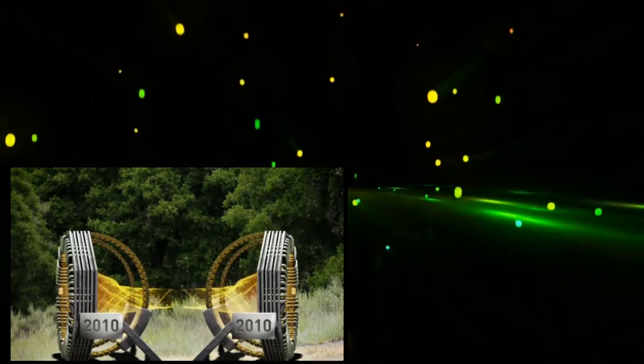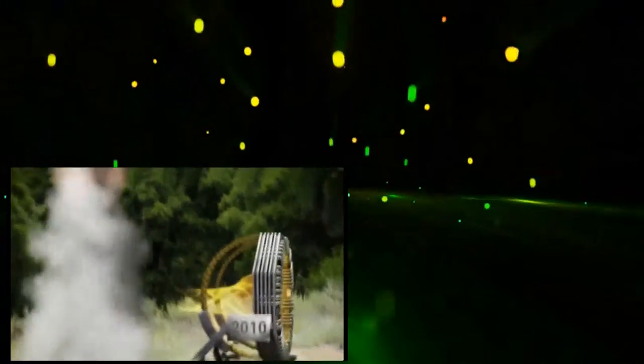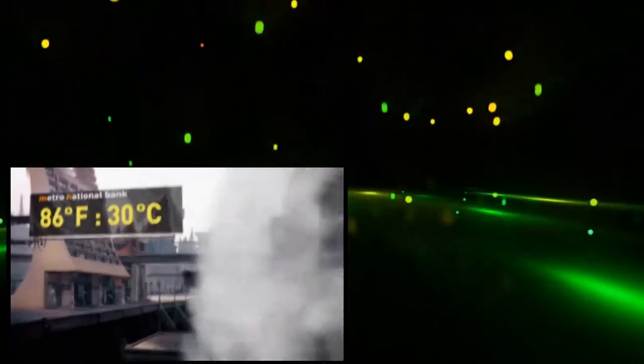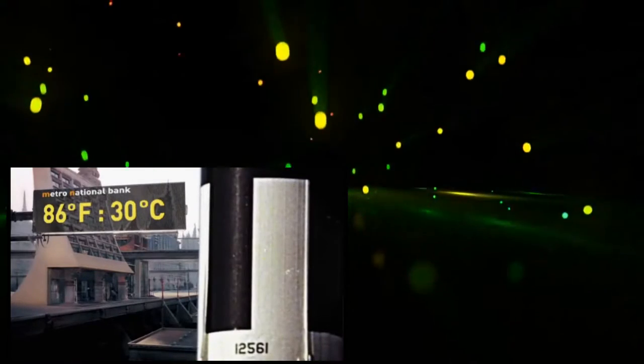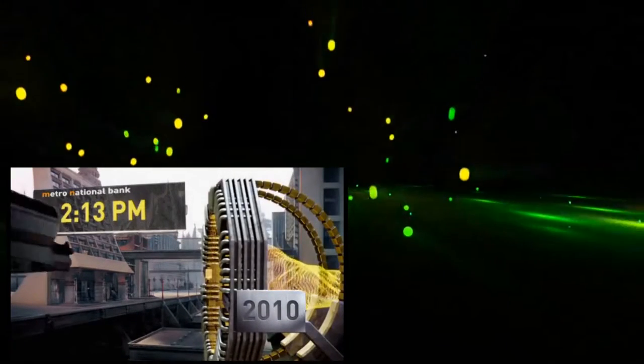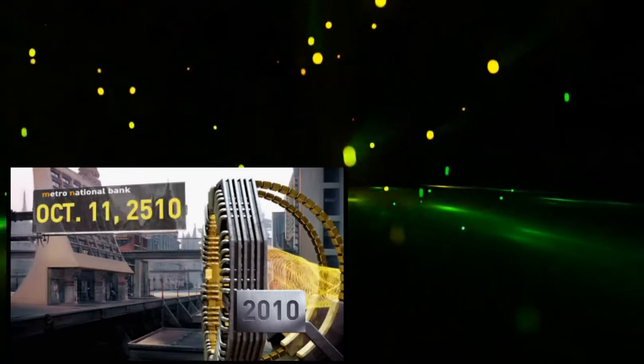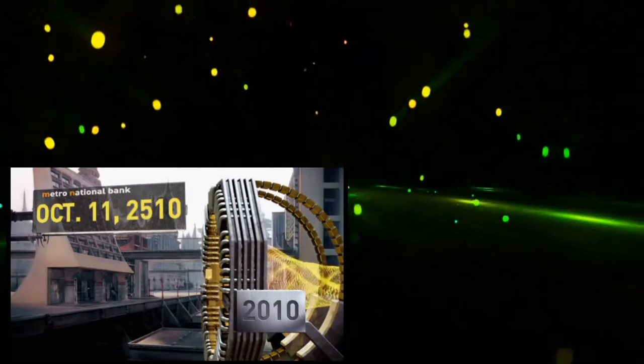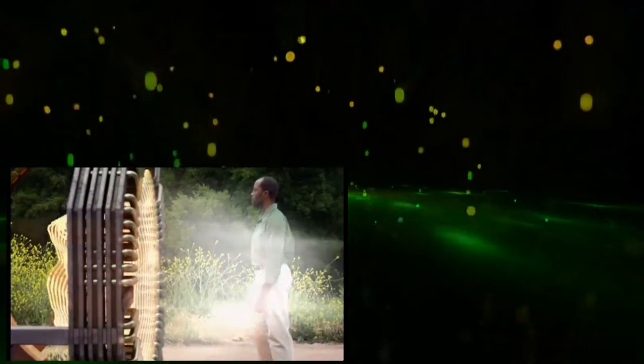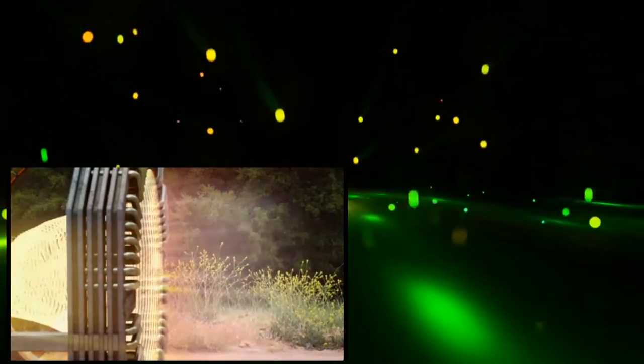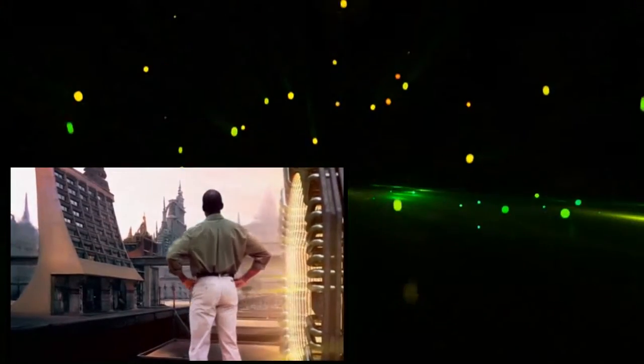You can take one end of the wormhole and put it on a rocket ship and send it off at very high speed and then back. What happens is that when it returns, it's in the future. A traveling wormhole opening from 2010 might return to Earth in 2510. Now if I walk into the past end, I can come out the other end and I'd be in the future.